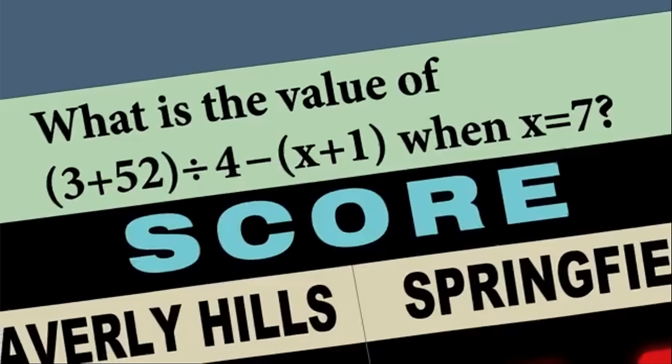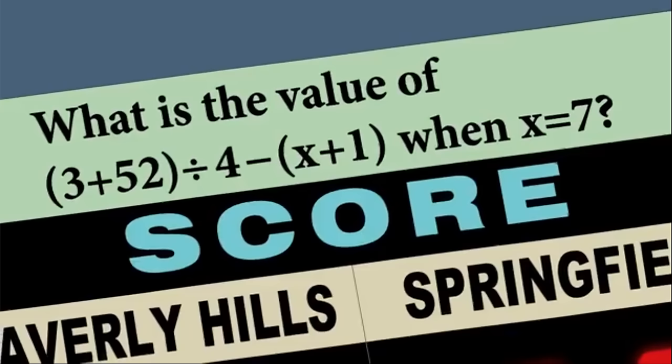Here we have another question that tests the order of operations, substituting in x equals 7. We first evaluate the bracket of 3 plus 52, giving 55 over 4, and then subtract 7 plus 1, so we end up with the answer of 5.75.